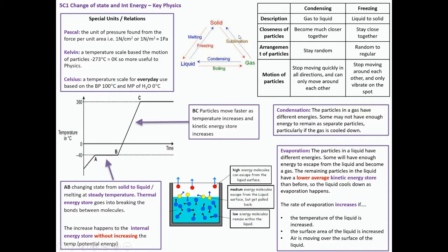You should be able to understand the difference between a solid, a liquid, a gas, their change of state ideas: melting, freezing, sublimation, condensation, boiling. Be able to explain what happens in condensing and freezing. Gas to liquid, particles get closer, they stay random, they stop moving quickly in all directions, can only move around each other. Liquid to solid, stay close together, random to regular, stop moving around each other and only vibrate on a spot. It depends on which way you're going with what's happening.